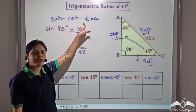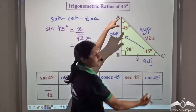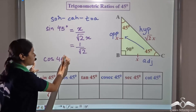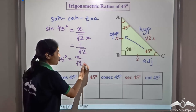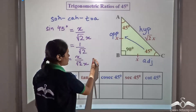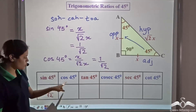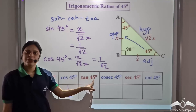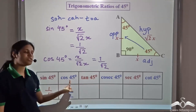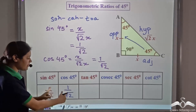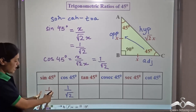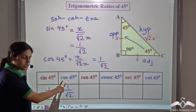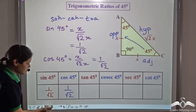Cos 45 degrees is adjacent over hypotenuse, which is X over root 2X, also equal to 1 over root 2. Tan 45 degrees is the ratio of sine to cosine, so tan 45 equals sin 45 over cos 45, which is (1/root 2) divided by (1/root 2), equal to 1.